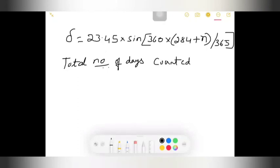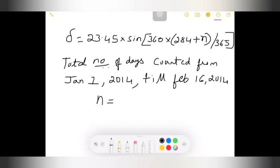We need to count from Jan 1st of the same year. In the problem it is given as 2014, till Feb 16, 2014. If you calculate number of days from Jan to Feb, from Jan 31 days, then Feb 16, if you add, you will get n equal to 47. Number of days from Jan 1st to Feb 16th will be 47. This is how we need to determine n.